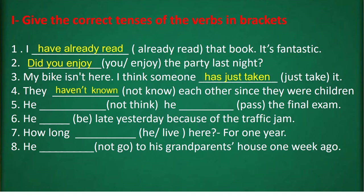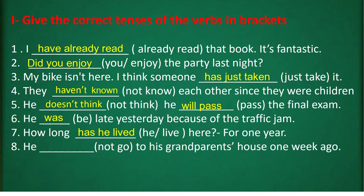Sentence 5: we use Present Simple and Future Simple — he doesn't think he will pass the final exam. Question 6: we use Past Simple — the answer is 'was': he was late yesterday because of the exam. Sentence 7: 'for one year' is a signal word of Present Perfect — the answer is 'has he lived': how long has he lived here? For one year. And the last one: 'one week ago' signals Past Simple — the answer is 'didn't go': he didn't go to his grandparents' house one week ago.